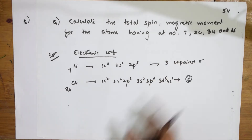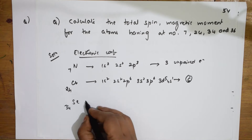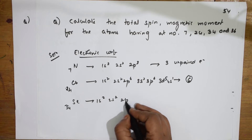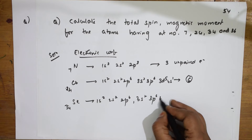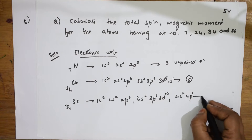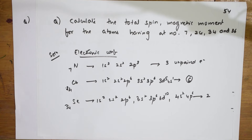The next element is 34 — selenium. Configuration: 1s², 2s², 2p⁶ (10 done), 3s², 3p⁶, 3d¹⁰ (all done), then 4s², 4p⁴. So how many unpaired electrons? 2 unpaired electrons, because 2 are paired and 2 are unpaired.